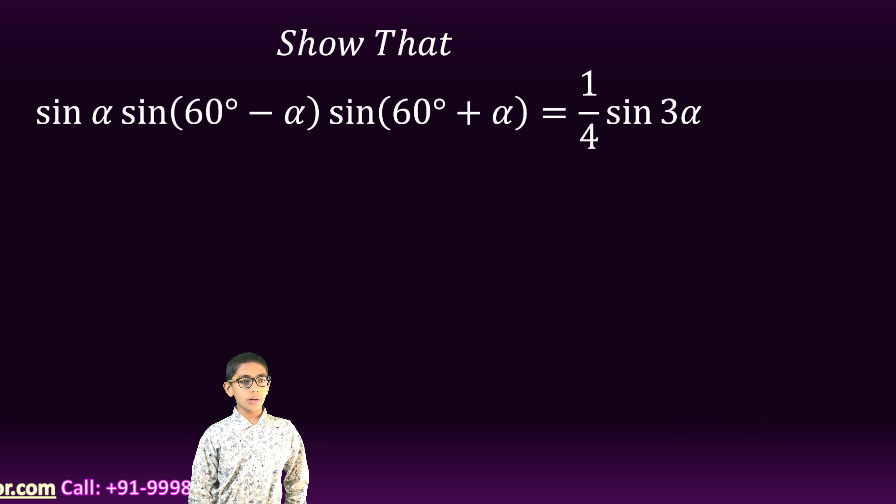Sin A multiplied by sin 60 minus A into sin 60 plus A is equal to 1 by 4 sin 3A.